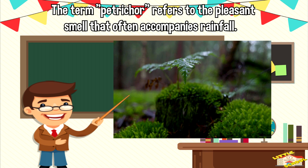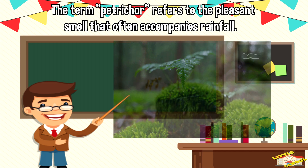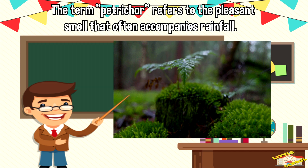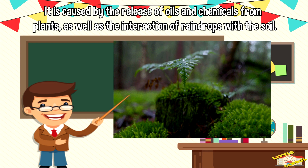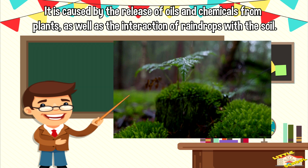The term petrichor refers to the pleasant smell that often accompanies rainfall. It is caused by the release of oils and chemicals from plants, as well as the interaction of raindrops with the soil.